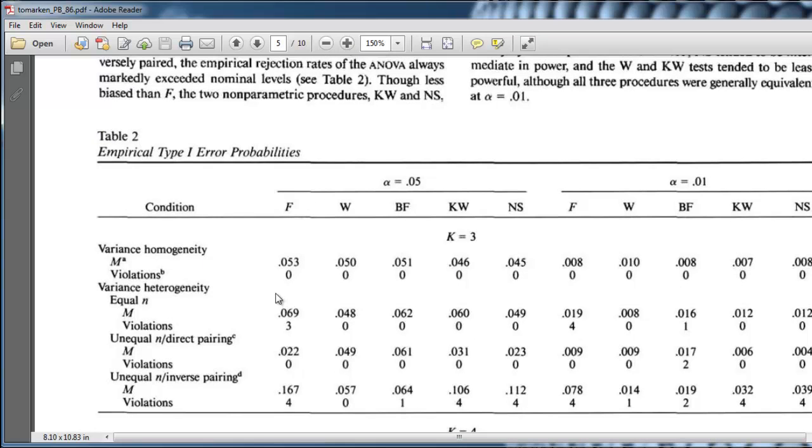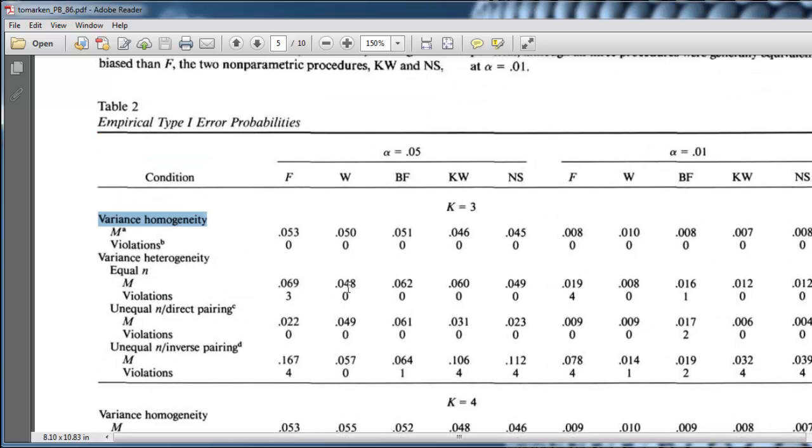What they got, this is for three groups. Let's just look at three groups. The results are very similar, whether they're three groups or four groups. So, in this case here, where there are three groups, variance homogeneity was actually satisfied,